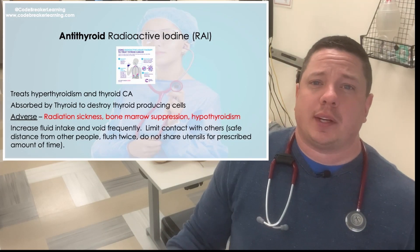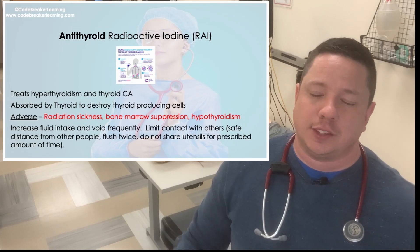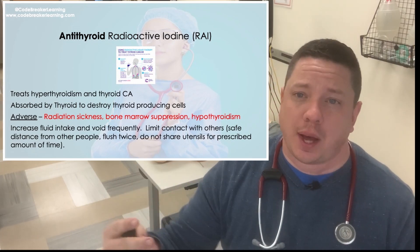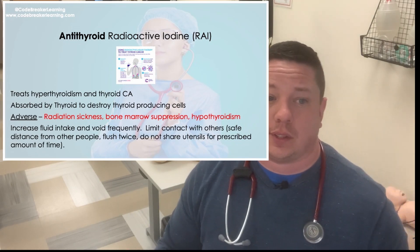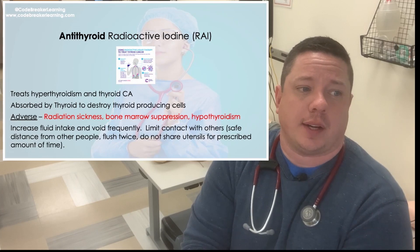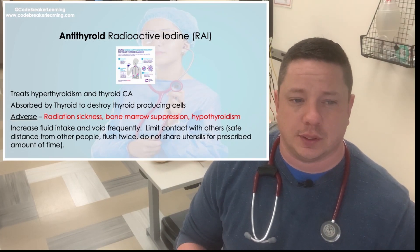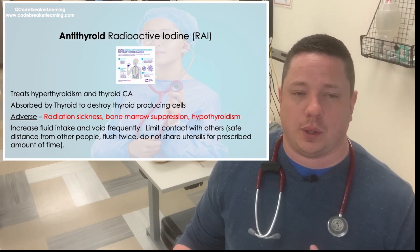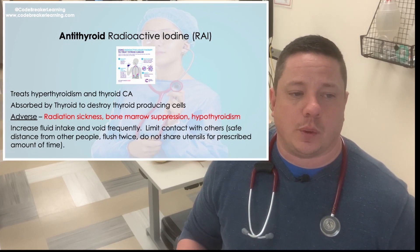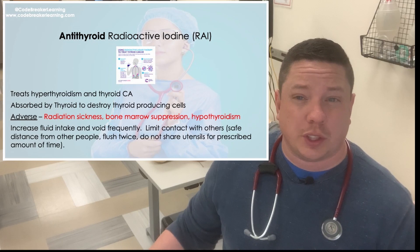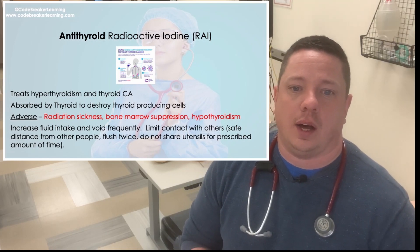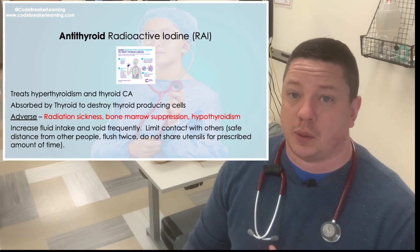The next antithyroid medication is radioactive iodine. Iodine suppresses thyroid cells from secreting T3 and T4 — we want to stop that because we're treating hyperthyroidism. This can be used for thyroid cancer or hyperthyroidism alone. Radioactive iodine gets absorbed by the thyroid and destroys the thyroid-producing cells. Adverse effects include radiation sickness, bone marrow suppression, and hypothyroidism. Increase fluid intake and flush twice. Don't share toilets or utensils, maintain safe distance from others, and stay away from pregnant women.